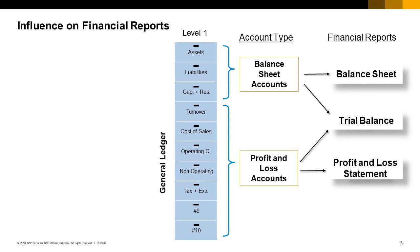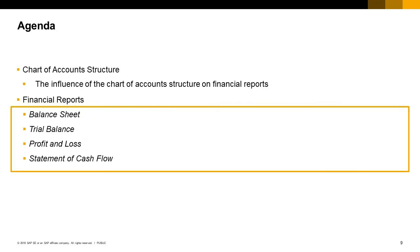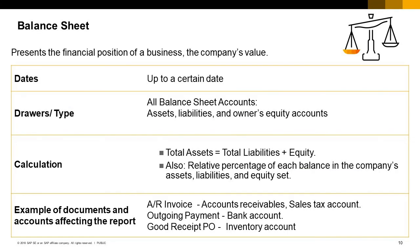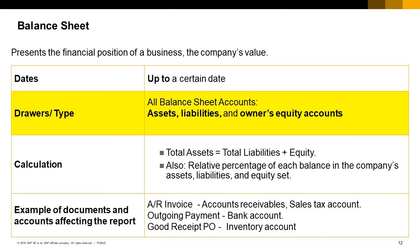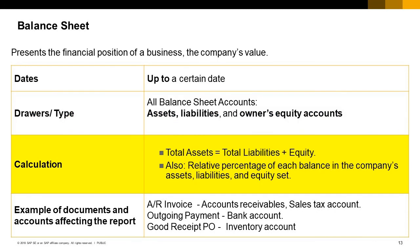All financial reports appear in the Financial Reports menu found in the Financials module. The balance sheet presents the financial position of a business — the company's value. You run the balance sheet up to a certain date, from the beginning of the company until that date. The balance sheet presents all balance sheet accounts: assets, liabilities, and owner's equity. When you issue the report, the system runs on the account balances and summarizes their values according to the formula: total assets equals total liabilities plus equity.